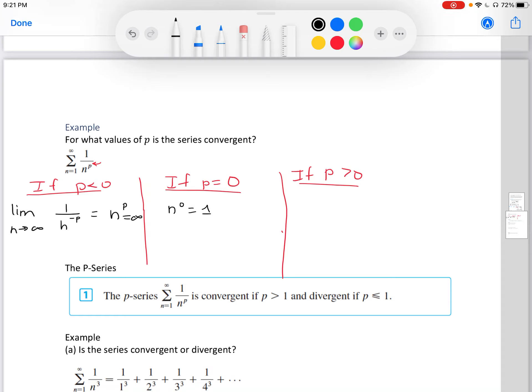And if p is greater than 0, we're going to have 1 over n to the p. So we know that's going to be continuous, positive, and decreasing. It's going to be approaching some value.